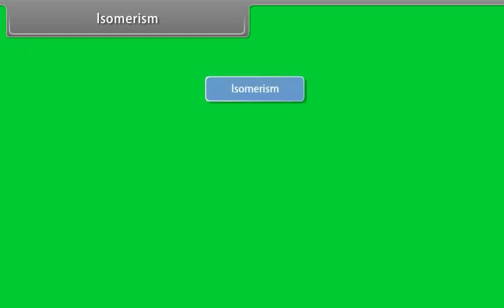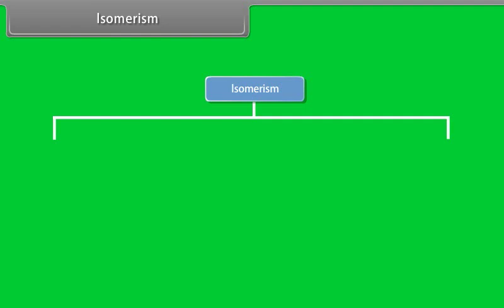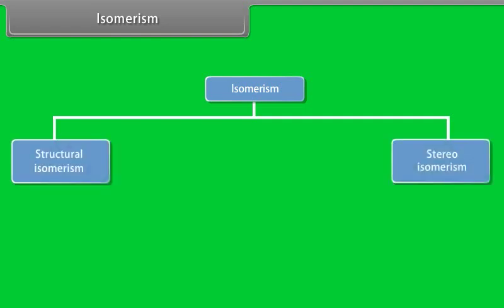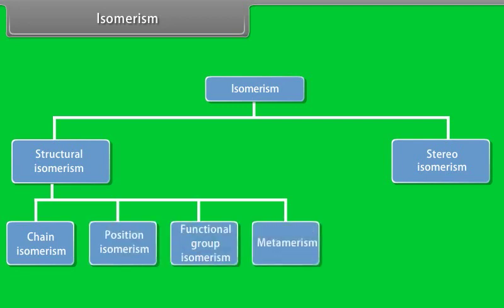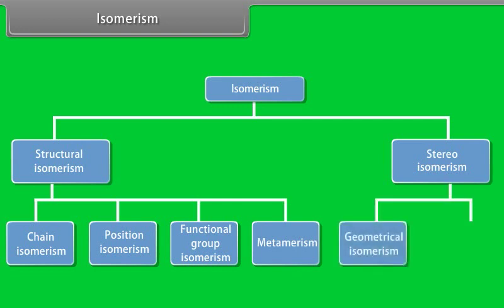Different types of isomerism: Isomerism can be grouped into structural and stereoisomerism. Structural isomerism can be subdivided into chain isomerism, position isomerism, functional isomerism, and metamerism. Stereoisomerism is further categorized into geometrical and optical isomerism.